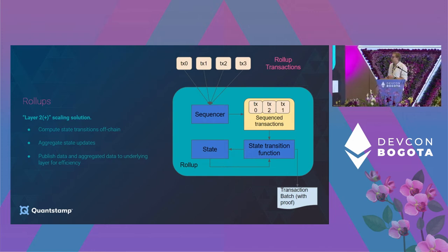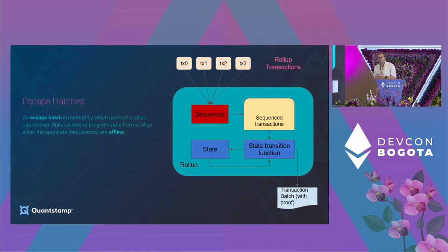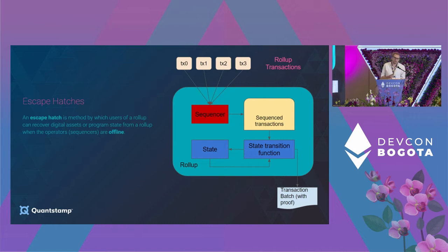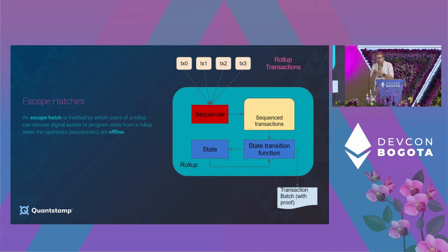But this is great when everything works — what happens when things don't? In particular, if your sequencer goes offline or some other component fails. Typically these escape hatches are discussed in the context of sequencer failures. Because if you had a bunch of money or assets or tokens locked up in one of these rollups, and suddenly the transaction that says 'give me my money back' is no longer sequenced, you're kind of screwed. So the functionality of an escape hatch is some way to get program state or digital assets off of this rollup system even when your sequencer or some other component has failed.